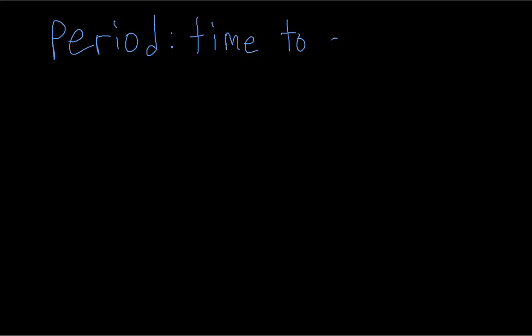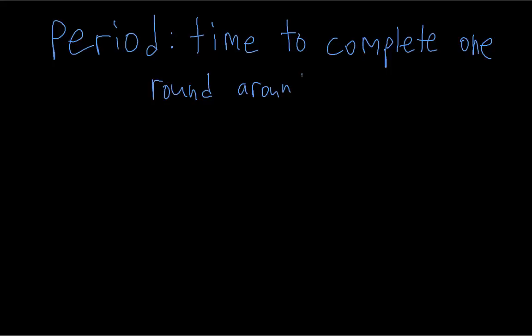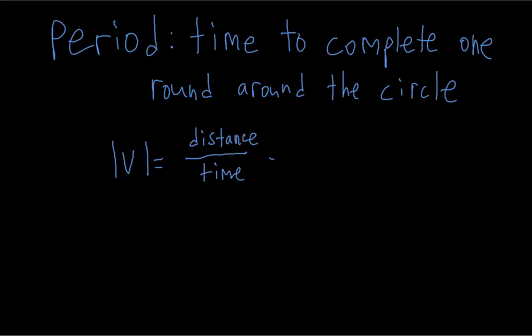Another new term is the period — the time it takes for the object to complete one full trip around the circle. We can easily find an expression for this. Since speed is distance over time, and one time around a circle the distance is the circumference, which is 2π times the radius, the period is going to be equal to the circumference divided by the speed of the object.